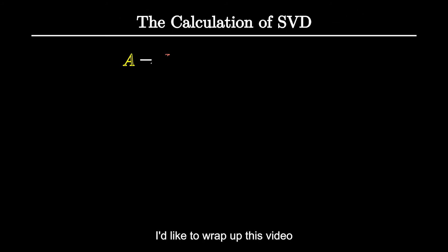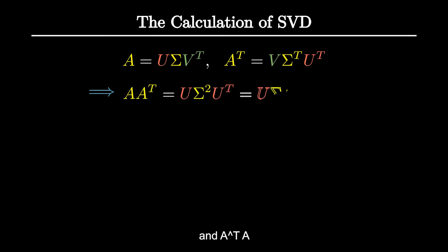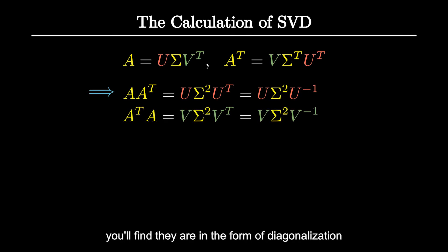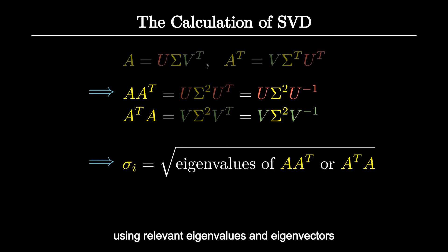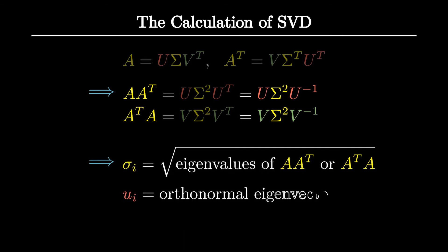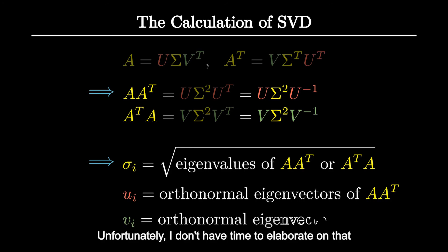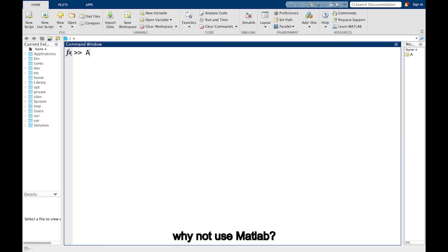I'd like to wrap up this video with the calculation of SVD. If you write out AA transpose and A transpose A, you'll find they are in the form of diagonalization. Thus, you may write out sigma, even V, using relevant eigenvalues and eigenvectors. Unfortunately, I don't have time to elaborate on that. But my suggestion is, why not use MATLAB?